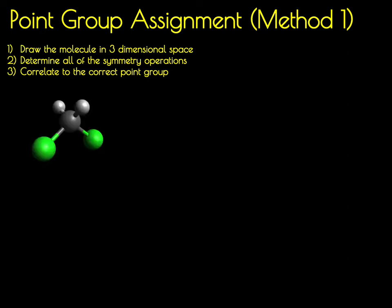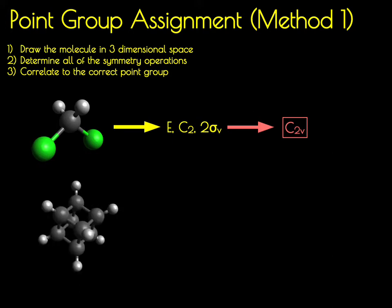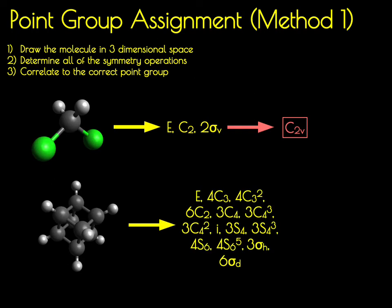For a low symmetry molecule like methylene chloride, this is relatively straightforward — you find four symmetry elements: E, a C2, and two mirror planes, which corresponds to the C2V point group. But if you go to a higher symmetry molecule, this method becomes very tedious and prone to error. For example, Cubane has 48 different symmetry operations placing it in the OH point group, and it would be very easy to miss one of those. So this is obviously a non-optimal method.